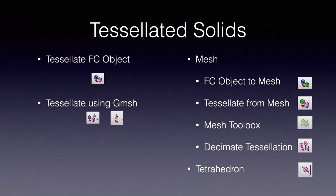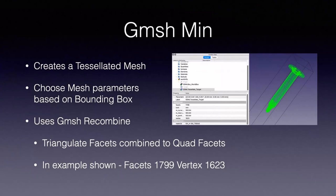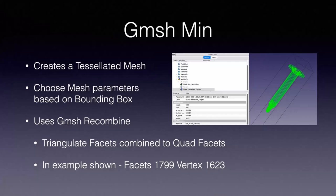The workbench offers a number of facilities for creating GDML tessellated solids, either directly from FreeCAD objects or from meshes, and also manipulating those tessellations. One of the tessellation facilities is called Gmesh Min. This first creates a mesh from the object and then uses Gmesh Recombine to reduce the number of facets, combining suitable triangular facets with quad facets. The screenshot shows Federico's step file which has been Gmesh Min processed, producing 1799 facets and 1623 vertices — very similar to the result he obtained by using numerous processes in the workbench in the past.